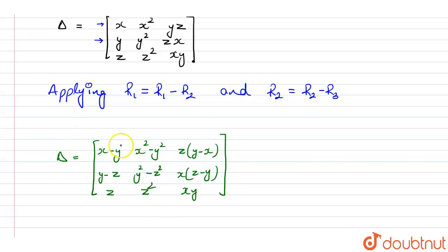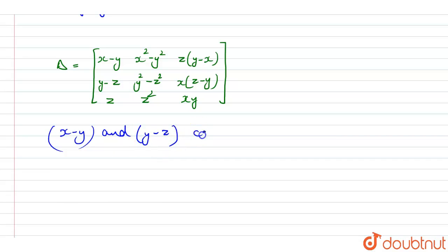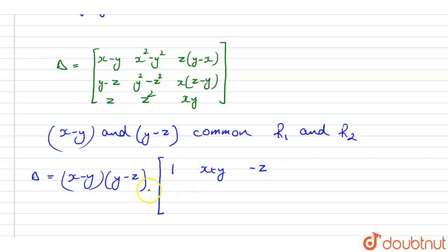Now we take (x−y) and (y−z) common from rows 1 and 2 respectively. The determinant becomes (x−y)(y−z) times a matrix where row 1 is: 1, x+y, −z; row 2 is: 1, y+z, −x; and row 3 remains: z, z², xy.